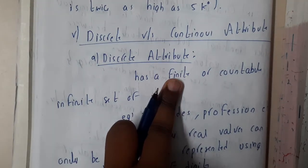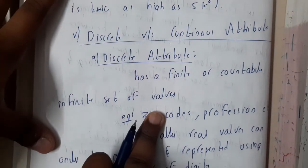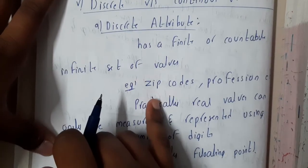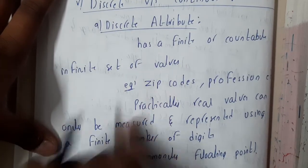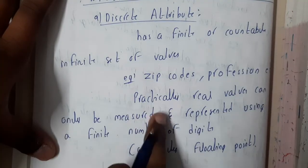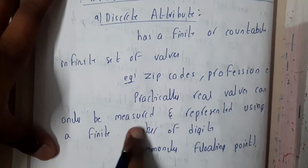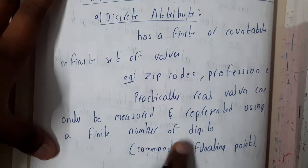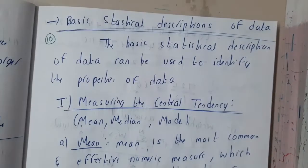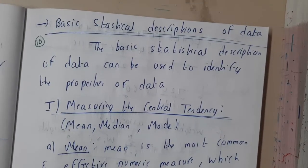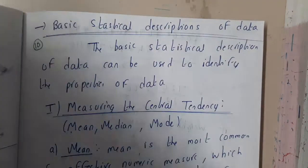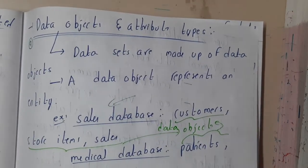The last type is discrete versus continuous attributes. Discrete attributes have a finite or countable set — a limited number of values, like a pin code or zip code or some kind of proficiency level. Continuous attributes can only be measured and represented using a finite number of digits, commonly involving floating point values.